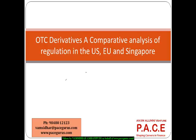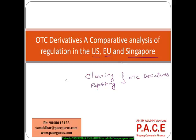In this session, my main focus is to look at the clearing as well as the reporting mechanisms of the OTC derivatives contracts across the United States, the European Union and Singapore — three major geographies. What are the key differences with respect to these clearing and reporting requirements and which of them are applicable to which kind of geographies? The OTC derivatives contract is probably the biggest financial market existing in the world today.